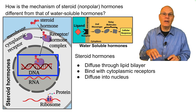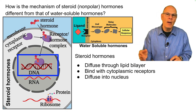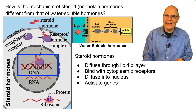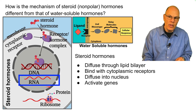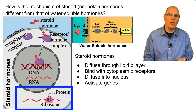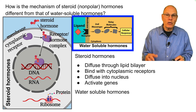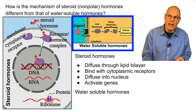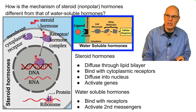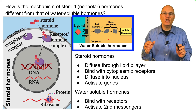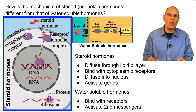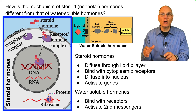This activates genes: DNA is transcribed into RNA, the RNA moves into the cytoplasm, and is read by a ribosome to produce a protein. Water-soluble hormones, by contrast, bind with receptors on the membrane surface, interact with second messengers, and bring about a cellular response. In general, steroid hormone responses are slower but longer-lasting, while water-soluble hormone responses are quicker.